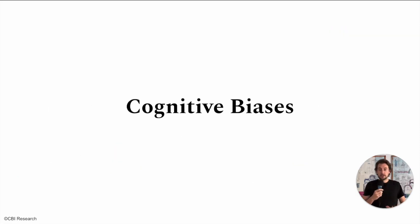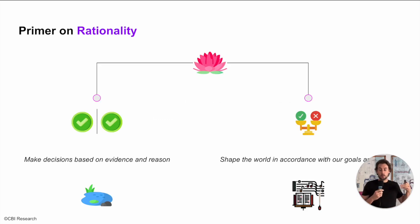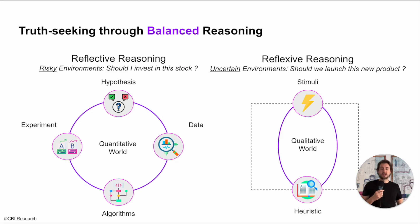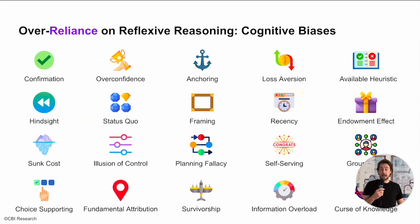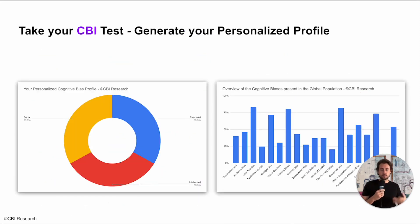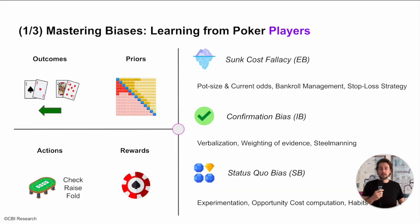We're then going to explore the fascinating world of cognitive science and cognitive biases. We're going to see how inaccurate perception and subjective reality essentially leads us to systematic deviation from rationality and improper decision making.